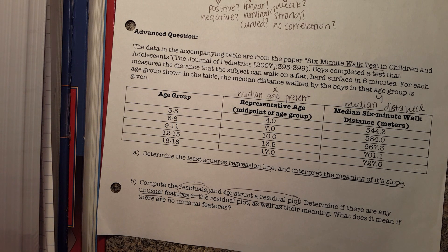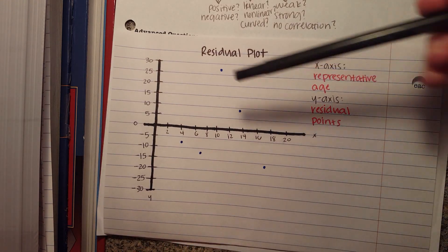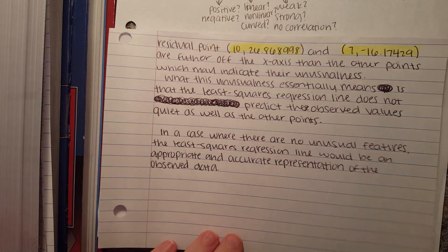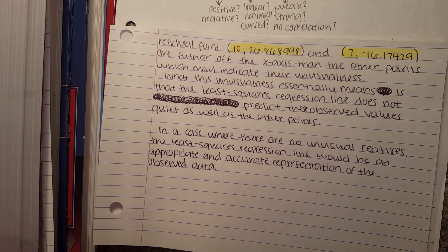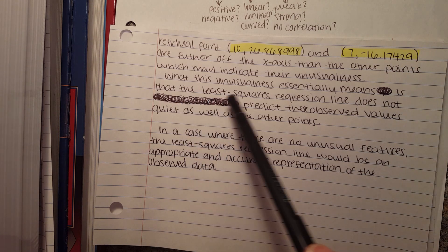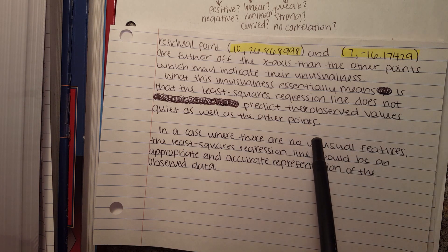Next it asks us to determine if there are any unusual features in the residual plot and their meaning. I decided that two of these points are considerably unusual — they are unusual because they are further off the x axis than the other points. What this unusualness essentially means is that the least squares regression line does not predict these observed values quite as well as the other points.